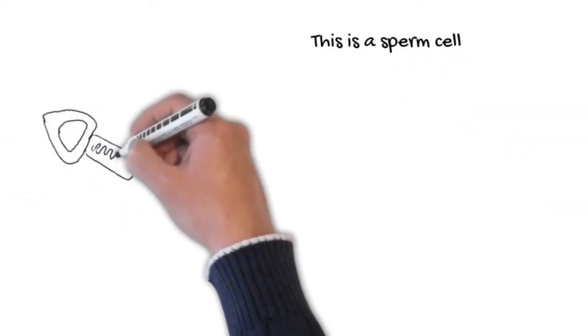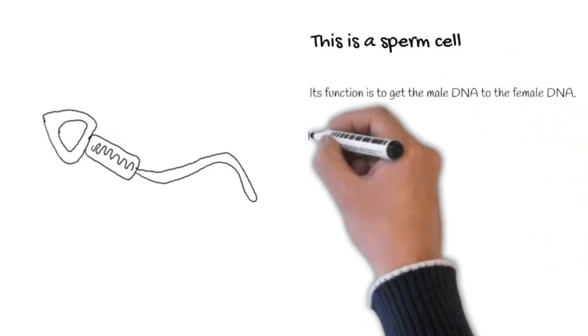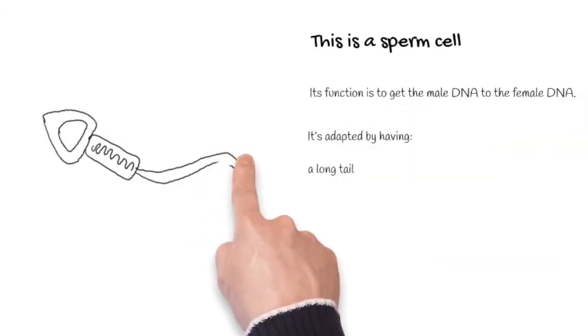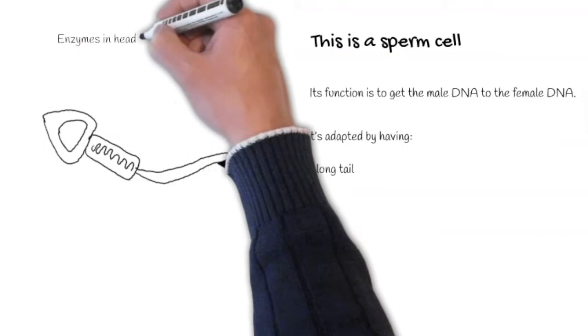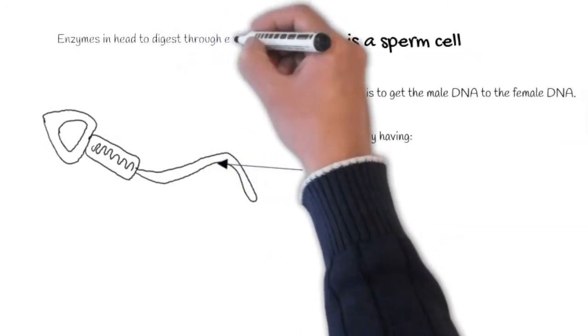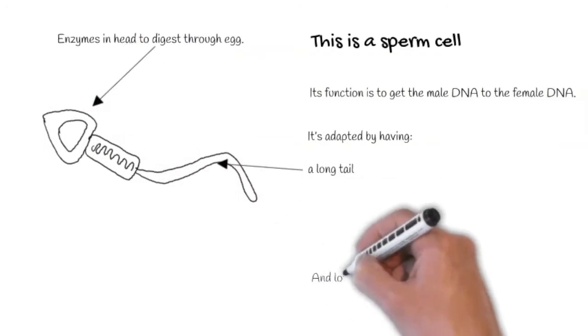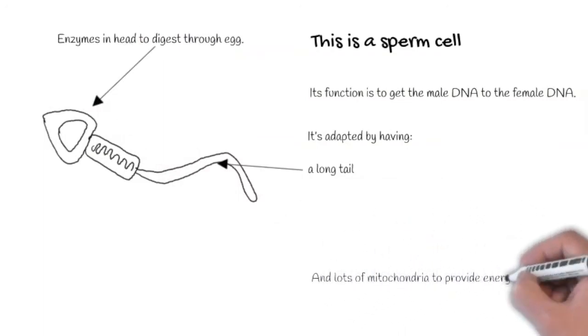Here we have a sperm cell. It is a specialised animal cell. Its function is to get the male DNA to the female DNA to fertilise the egg. It is adapted by having a long tail in order to swim, enzymes in the head to digest through the egg, and finally it has lots of mitochondria to provide lots of energy for its swim.